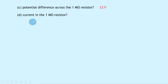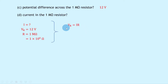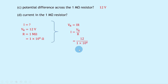For part D, as soon as the switch is closed, what is the current in the 1 megaohm resistor? We can calculate this maximum current. We're trying to find the current I. We know the potential difference across the resistor VR is equal to 12 volts, and the resistance R is equal to 1 megaohm, or 1×10⁶ ohms. Writing Ohm's law: VR equals IR, rearranging gives I equals VR over R. Substituting: 12 divided by 1×10⁶ gives 1.2×10⁻⁵ amps.